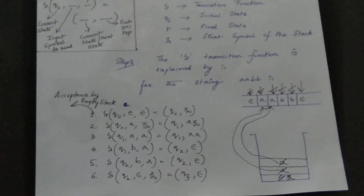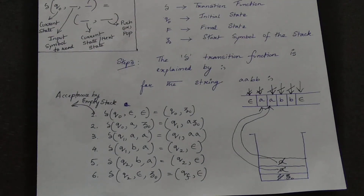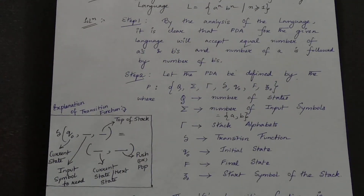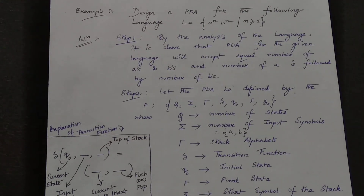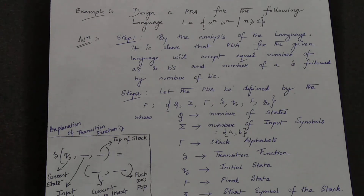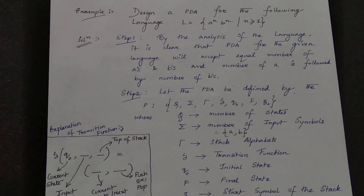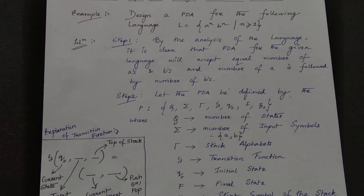The language a^n b^n (or 0^n 1^n) is the preliminary question for understanding PDA construction. In the next lecture, I will cover two more examples with different types of languages, including how to skip a particular transition. Thank you — if you have any doubt or query, please comment below.